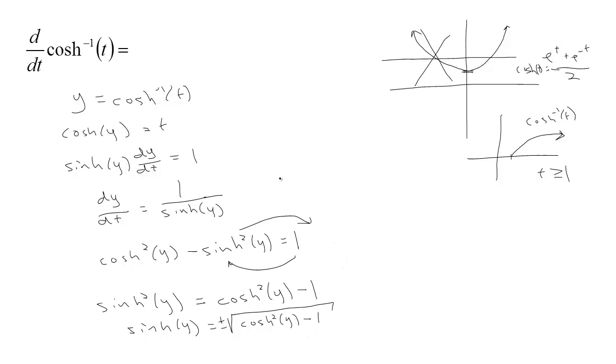So, the sinh of y should be equal to plus or minus the square root of cosh²(y) minus 1. But here's the thing. If y is the cosh inverse of t, then y is automatically positive.